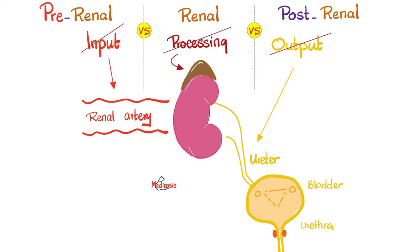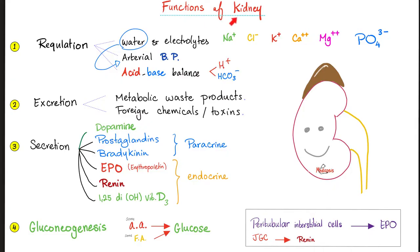If the problem is before the kidney — less blood reaching it — it's called pre-renal renal failure, pre-renal kidney injury, or pre-renal azotemia. If the problem is inside the kidney itself, it's called intrarenal azotemia. If the problem started after the kidney — in the ureter, bladder, or urethra — it's called post-renal kidney injury.